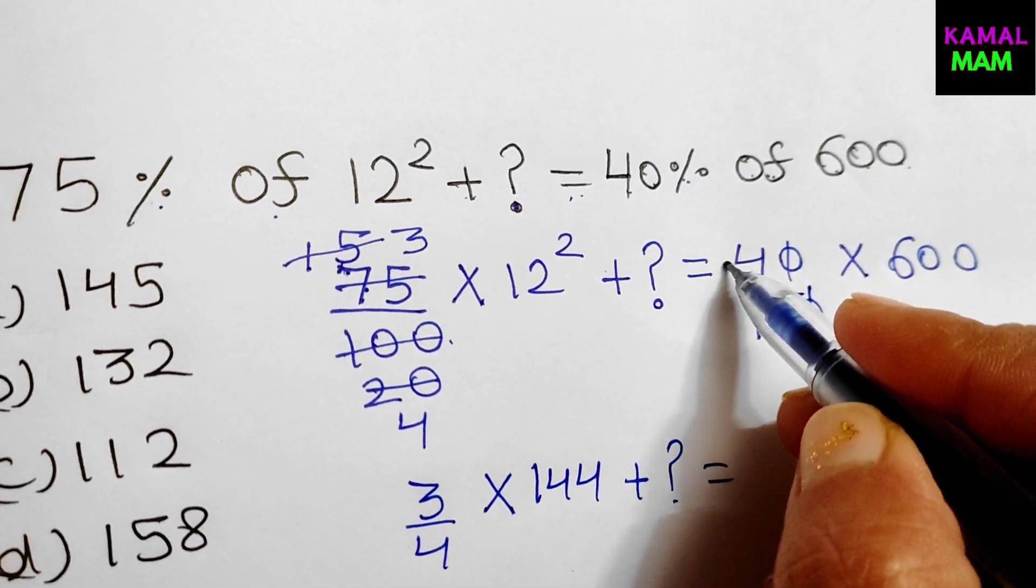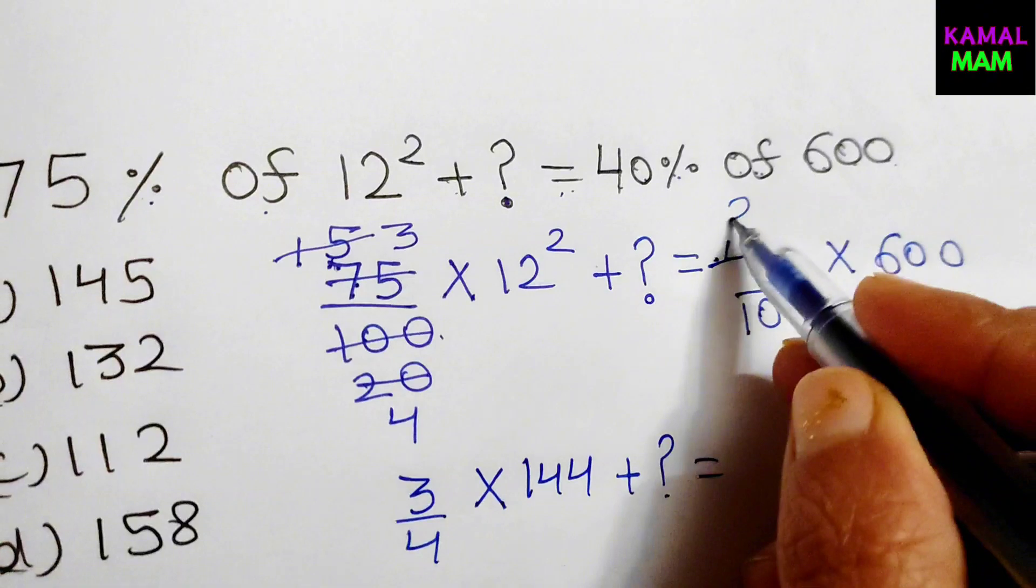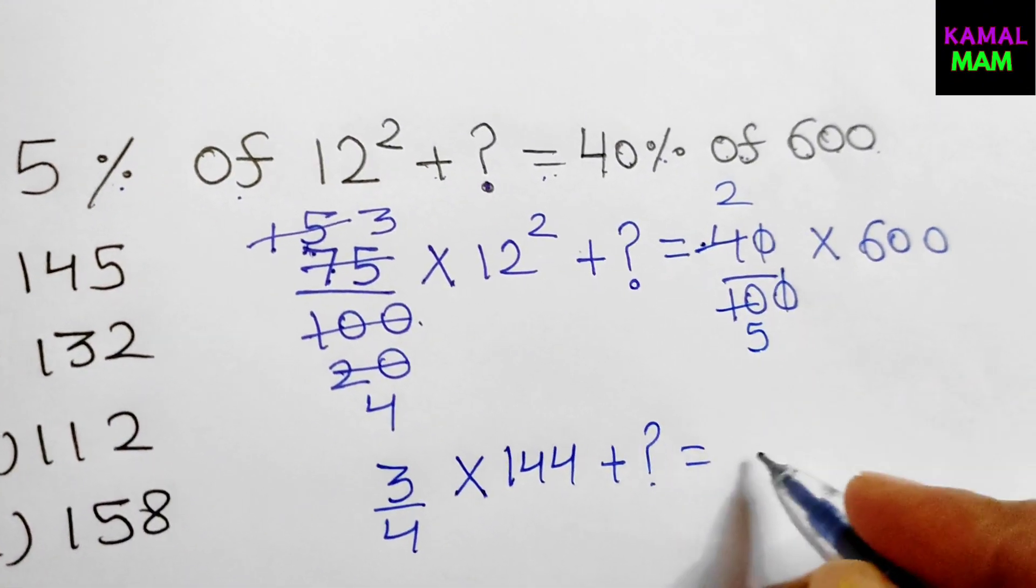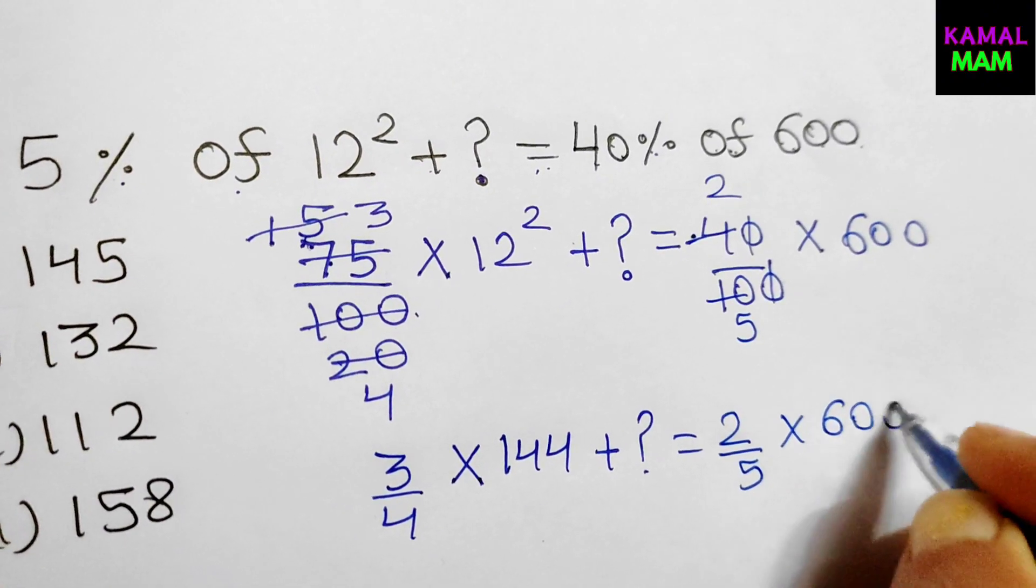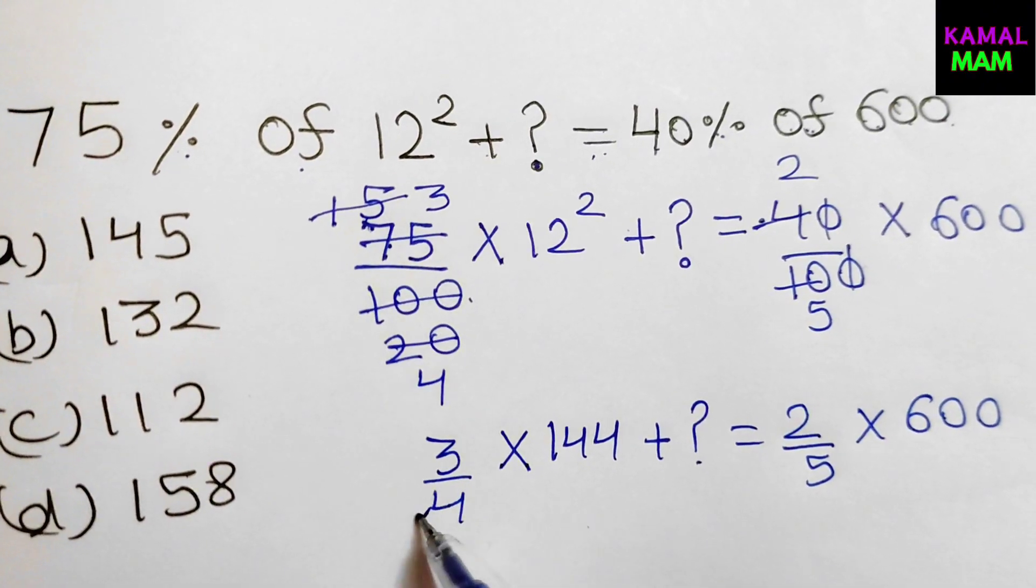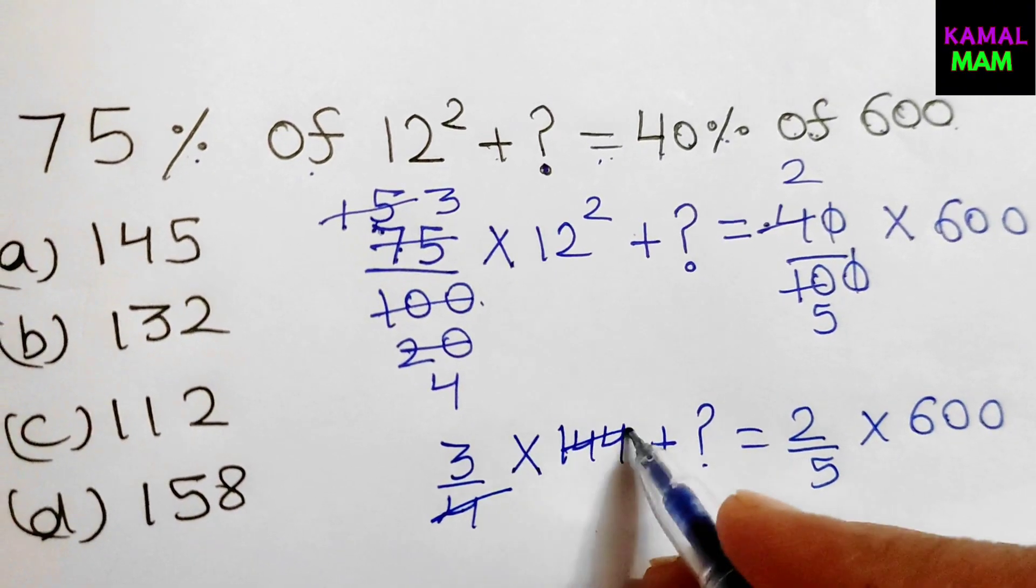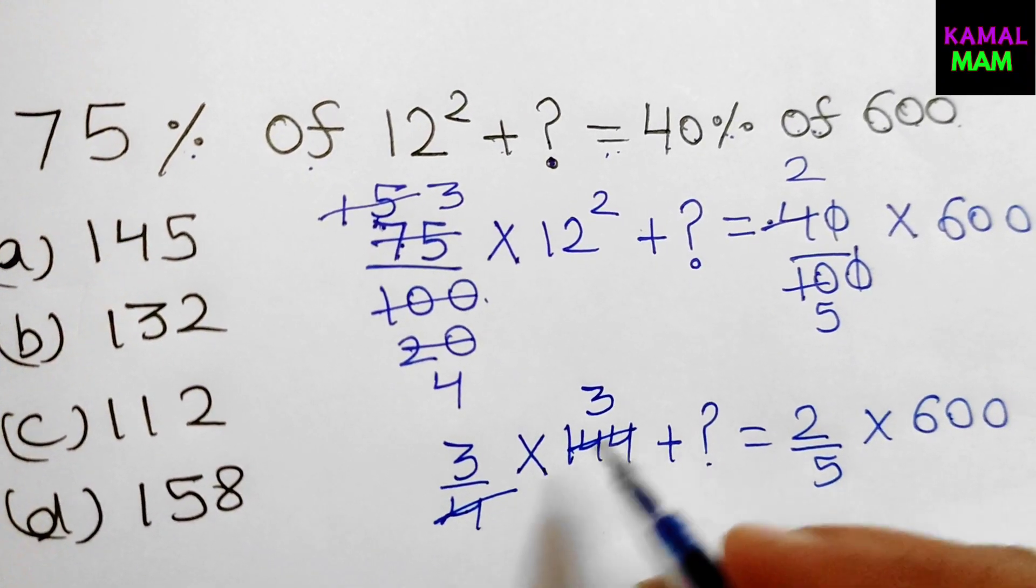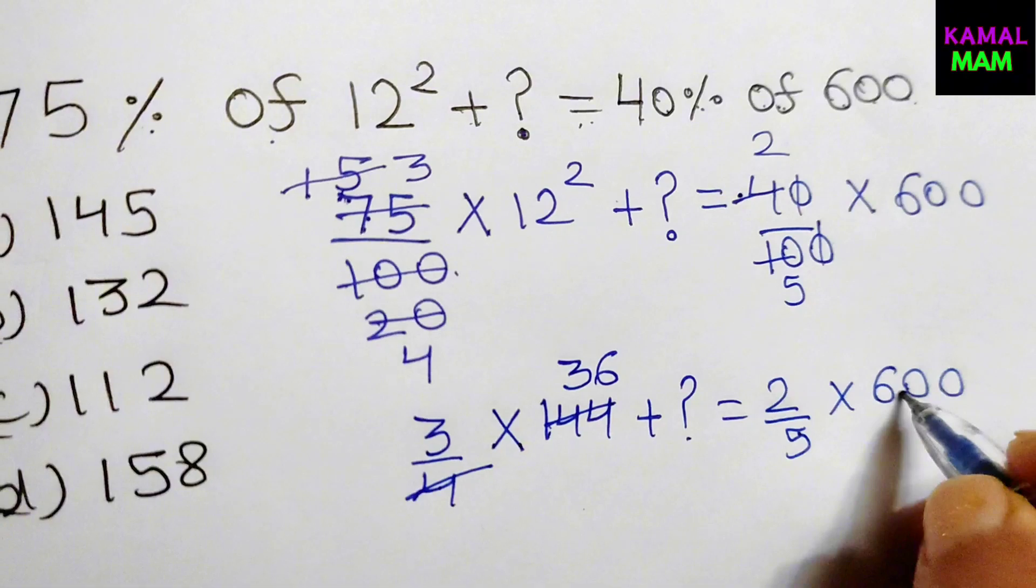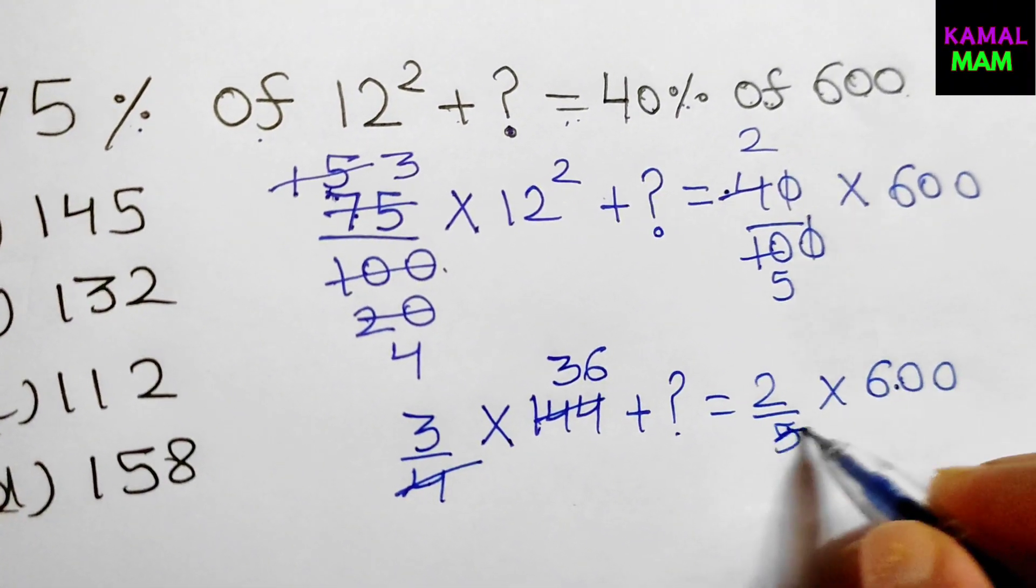It will go on the table of 2. 2, 2, 2 the 4, 2, 5 the 10. 2 by 5 multiply it with 600. It will go on the table of 4. 4 times 3 is 12 and 4 times 6 is 24. It will go on the table of 5.